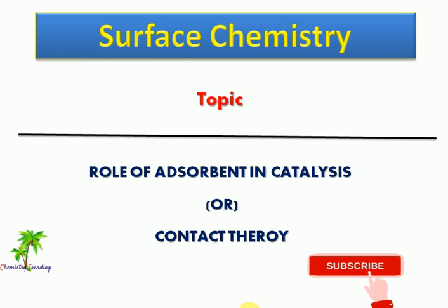What is meant by catalysis? Catalysis alters the rate of chemical reactions. Catalysis is classified into two types: positive catalysis and negative catalysis. Catalysis that increases the rate of reactions is called positive catalysis, and catalysis that reduces the rate of reactions is called negative catalysis.